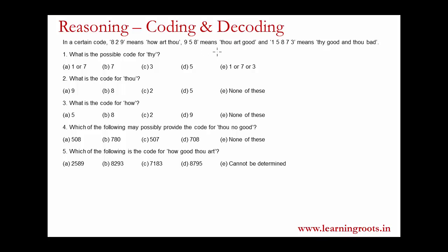Let's look at the first two strings. 829 is present here and 958 is present here, so 8 and 9 are common to these two strings. We need to figure out what corresponds to 8 and 9. In 'how art thou', any two words correspond to 8 and 9, and in 'thou art good', any two words correspond to 8 and 9. The words common to both are 'art' and 'thou', so thou corresponds to either 8 or 9 and art corresponds to the other.